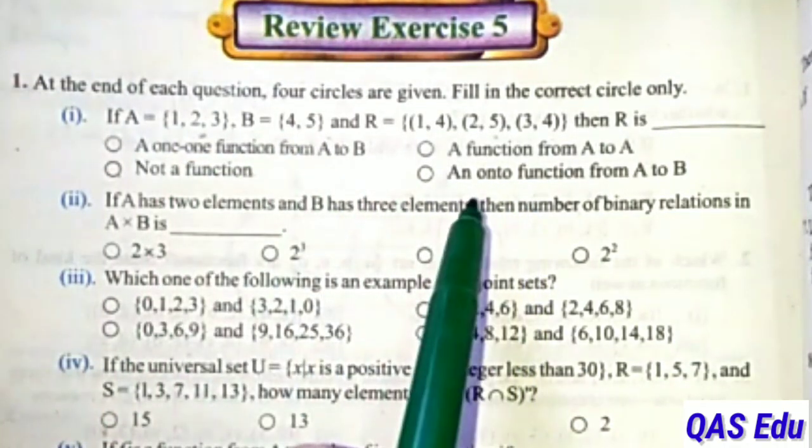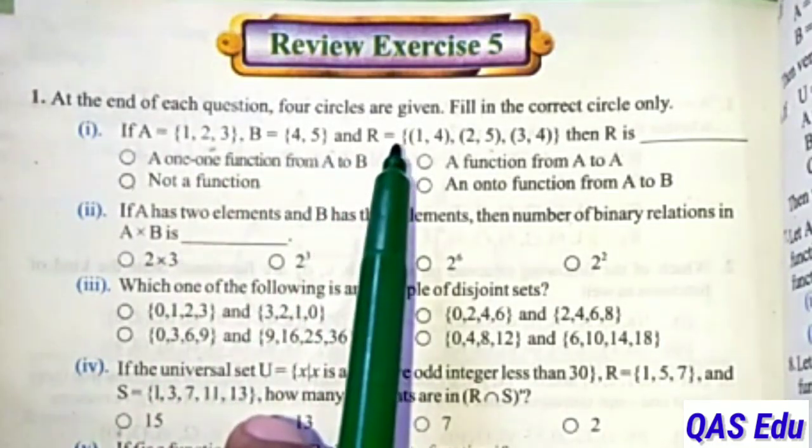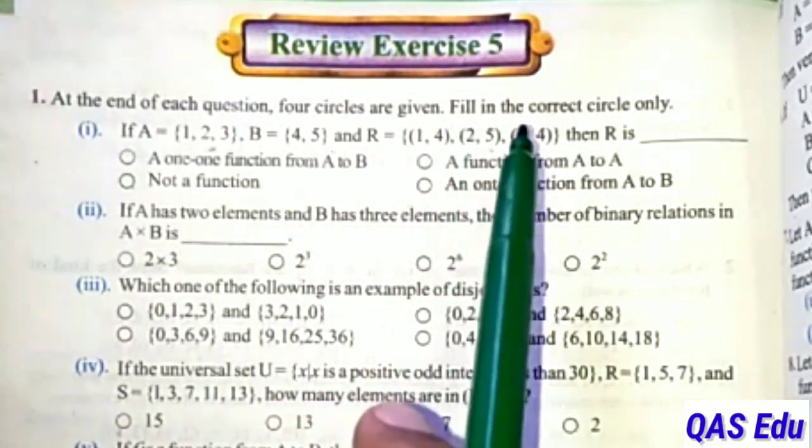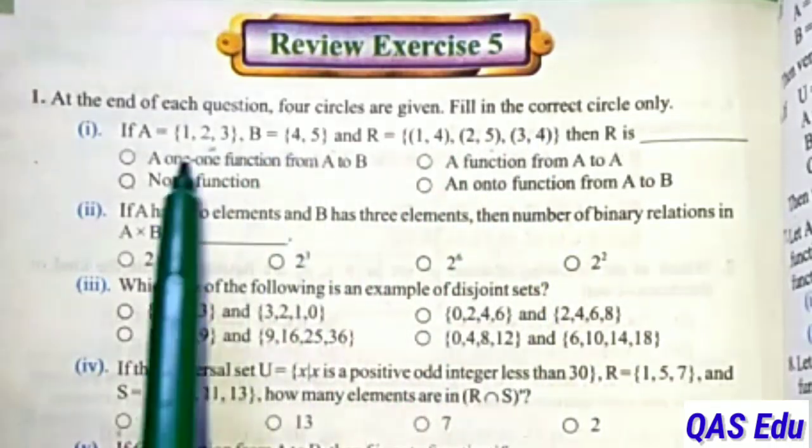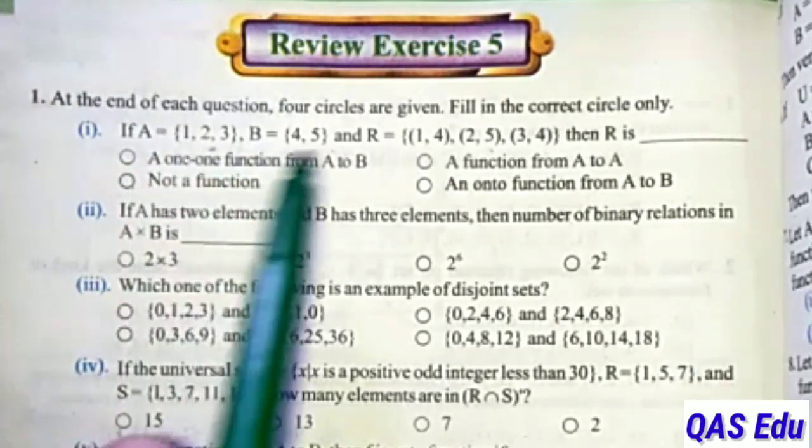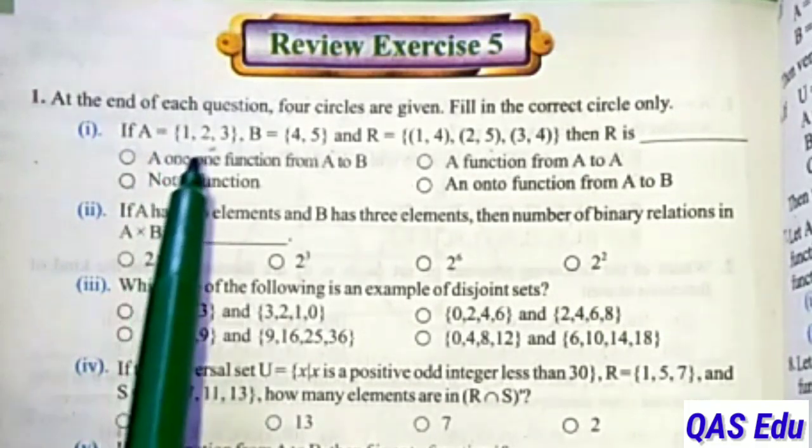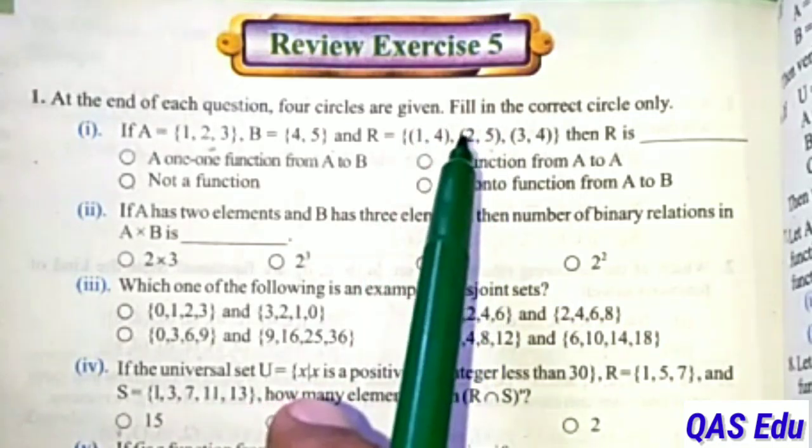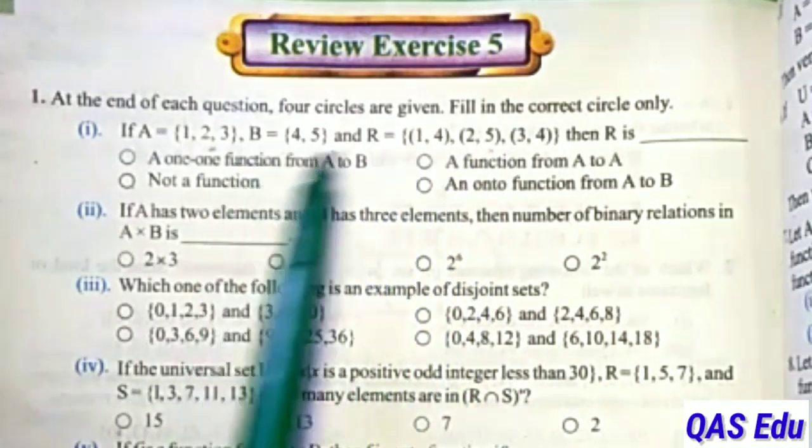First check if it's a function. Domain has elements {1, 2, 3}. Domain and first set are the same. The domain consists of all first elements {1, 2, 3}. One condition is satisfied - domain equals first set. Also check for repetition. Elements 1, 2, 3 don't repeat in the first positions - no repetition of 1, 2, or 3. So it's a function.